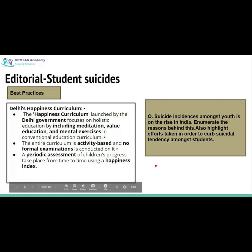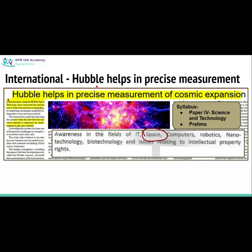The next article is taken from the international segment: 'Hubble Helps in Precise Measurement.' This topic is important from your syllabus Paper 4 science and technology. Questions related to this can also be asked in the prelims. If you look at the science and technology syllabus, there is a subtopic — 'awareness in the field of space' — and this article is related to that subtopic.